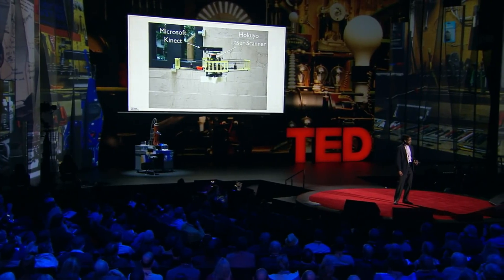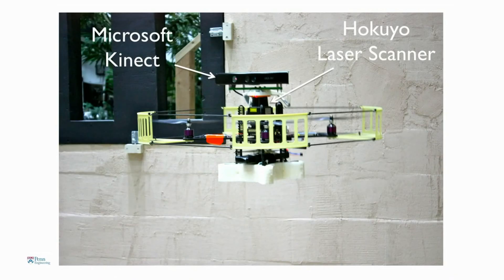It's equipped with a camera and a laser scanner. It uses these sensors to build a map of the environment. That map consists of features like doorways, windows, people, and furniture.